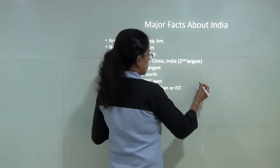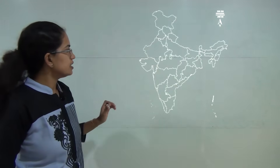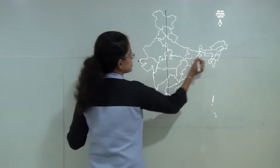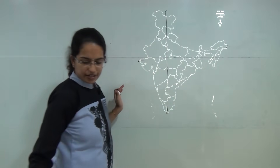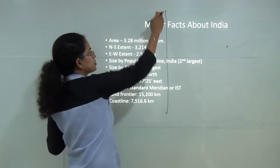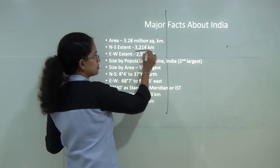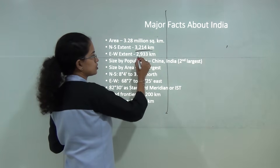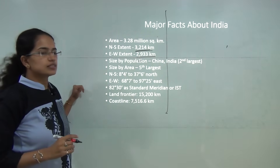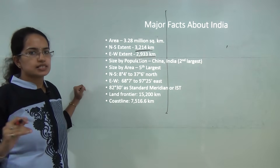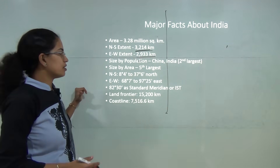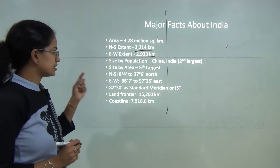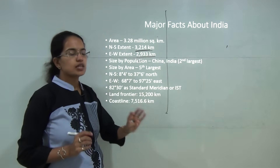When we talk about India on the map, we will discuss the north-south extent and the east-west extent. North to south, India is 3214 kilometers. East to west, from Gujarat to Arunachal Pradesh, it is 2933 kilometers. By population, India is the second largest nation, next only to China.